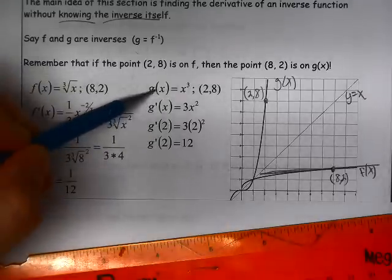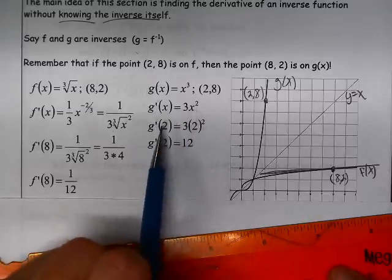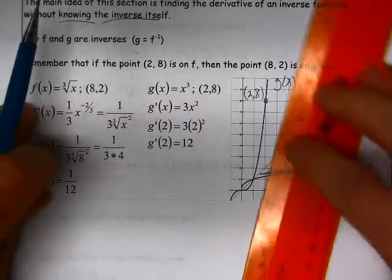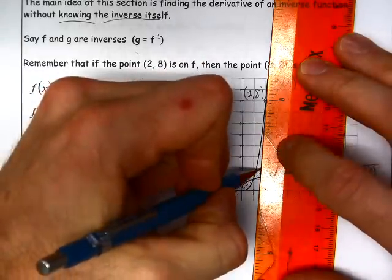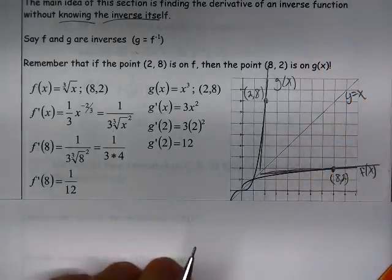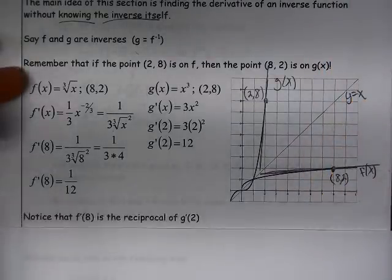If we look at g of x, g of x is x cubed, take the derivative, it's three x squared, plug in x equals two, and we get 12. So what that tells us is the slope of that tangent line there, it's very steep, slope of that tangent line there is 12.